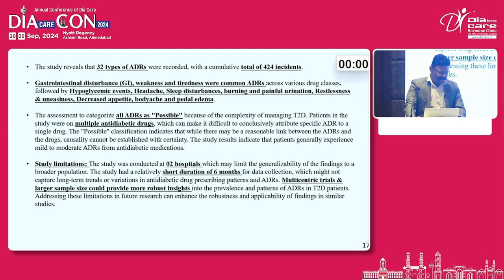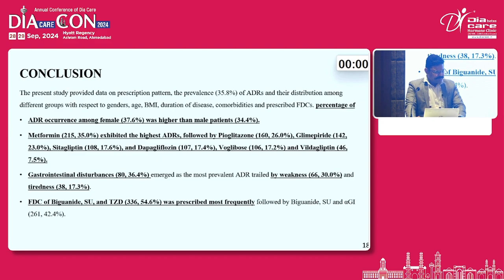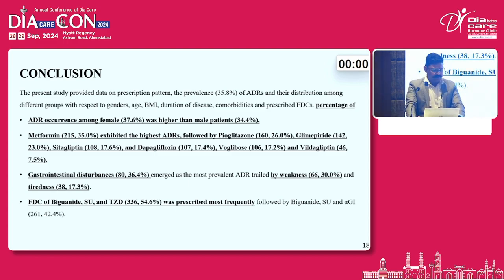This study has limitations: only two hospitals were selected and the study duration was short. A multicentric trial with a larger sample size would be required. In brief, ADR occurrence of 37.6% was higher in females. Metformin was the most prescribed drug. GI followed by weakness and tiredness were the most reported ADRs. The FDC of pioglitazone, sulfonylurea, and TGD was the most prescribed drug combination. Thank you.